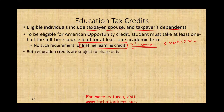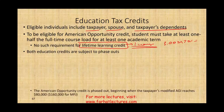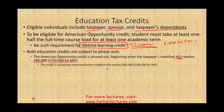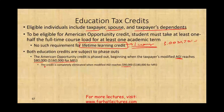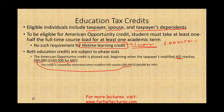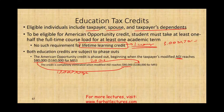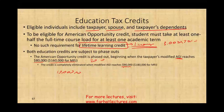Both education credits are subject to phase-out. The American Opportunity Credit begins to phase out when the taxpayer's modified AGI reaches $80,000 for single filers and $160,000 for married filing jointly. The credit is completely eliminated when AGI reaches $90,000 for single — a $10,000 phase-out range. For married filing jointly, the phase-out starts at $160,000 and is eliminated at $180,000 — a $20,000 range.